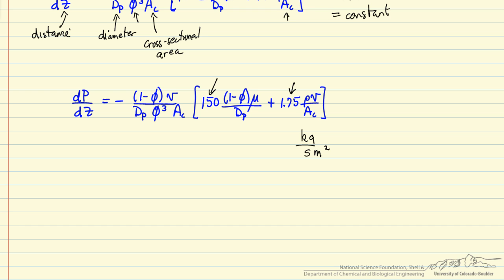This is dimensionless. This is also dimensionless, the constants. The void fraction is dimensionless. The viscosity has units of kilograms per meter per second, and the diameter also has units of meters.